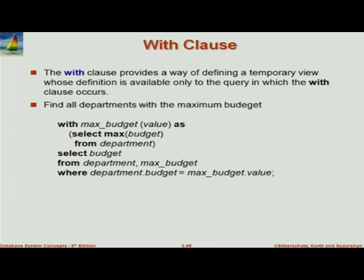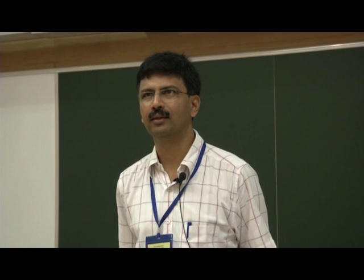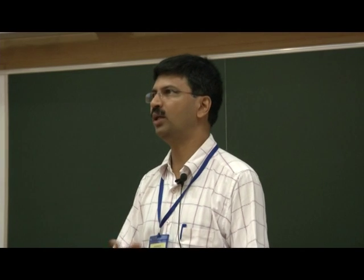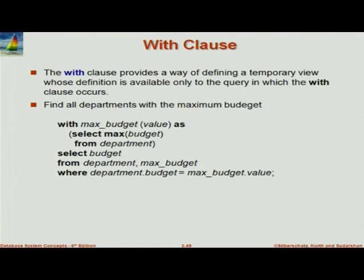So what is this doing? It's finding all departments which have the maximum budget. This is a common scenario — find the department with the maximum budget. That's badly posed in English: what if there are two departments with the maximum budget? So when you write queries in SQL, you have to be clear. This one says find all departments with the maximum budget — it is unambiguous and clear, and it's going to find all of them.